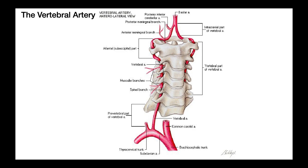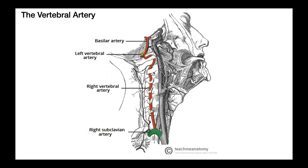Something interesting happens at the level of C2, the axis. Whenever the vertebral artery exits from the transverse foramen of the axis, it undergoes a curvilinear path from the top of the axis through the atlas, and all the way up to where it fuses with the contralateral vertebral artery. When this vertebral artery emerges superiorly from the transverse foramen of C2, it actually moves anteriorly. So it moves anteriorly on its way to the C1 transverse process, because the transverse foramen of C1 is actually positioned a little bit more anteriorly relative to the rest of the transverse foramina.